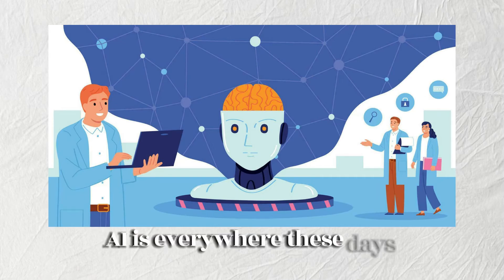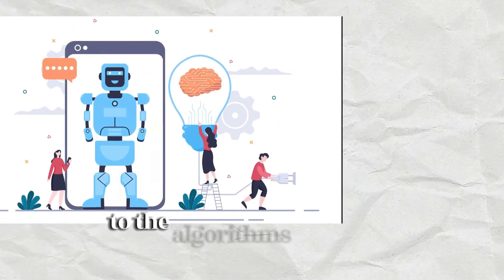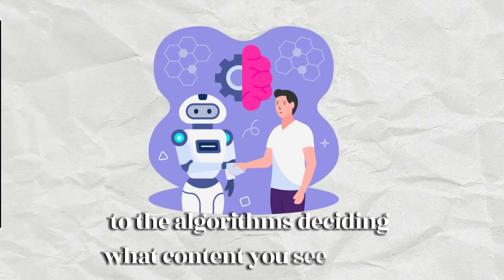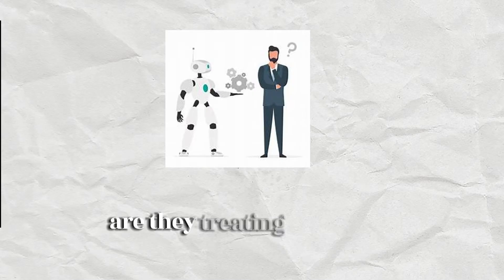AI is everywhere these days, from the apps on your phone to the algorithms deciding what content you see online. But as we rely more on these powerful tools, we need to ask ourselves, are they treating everyone fairly?